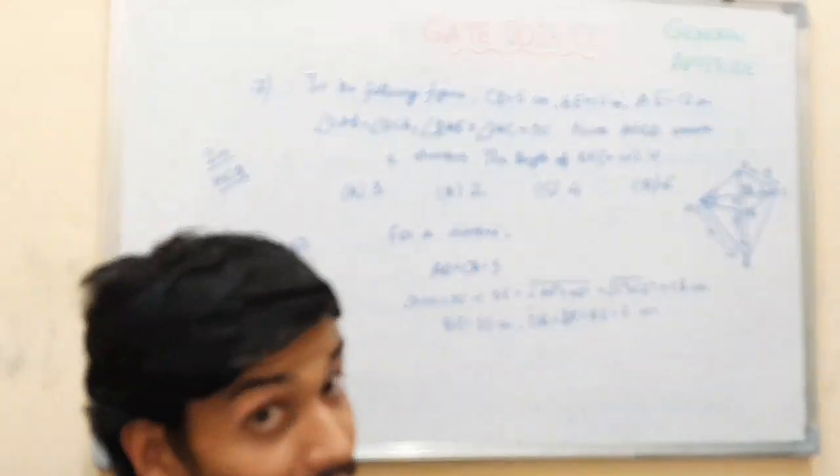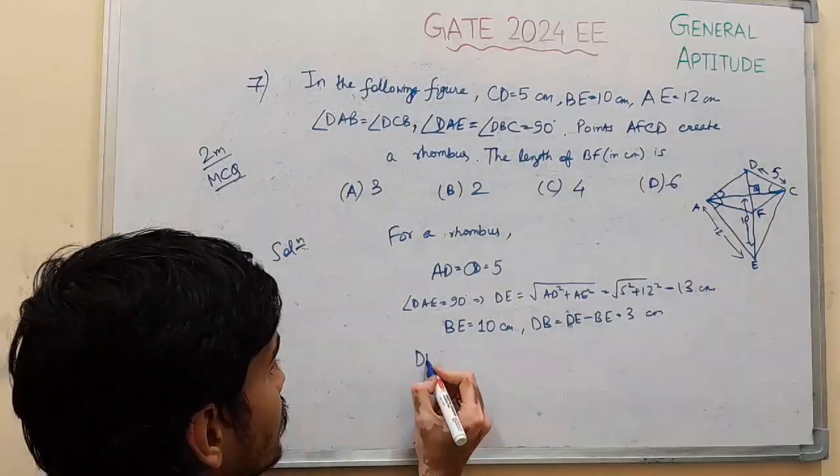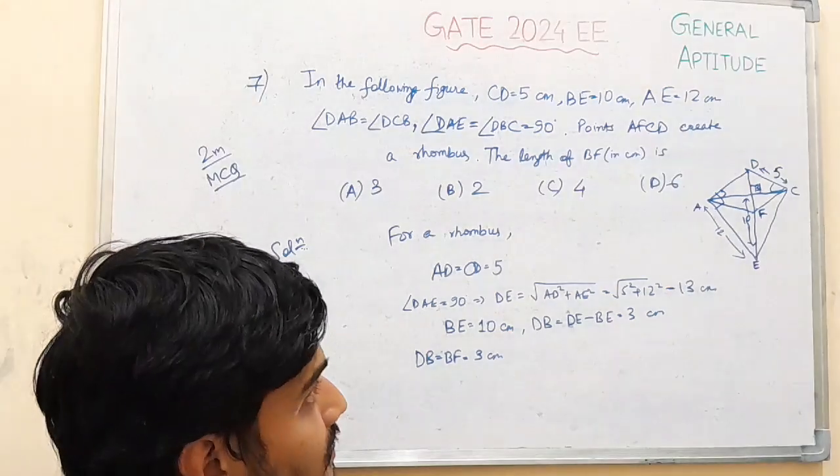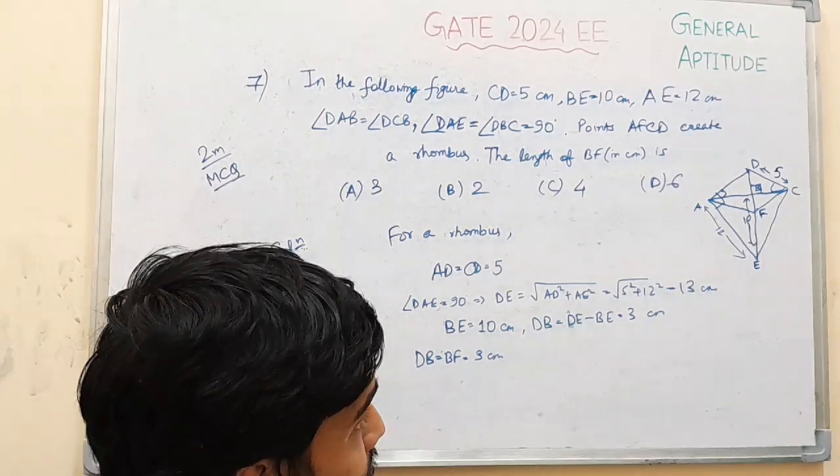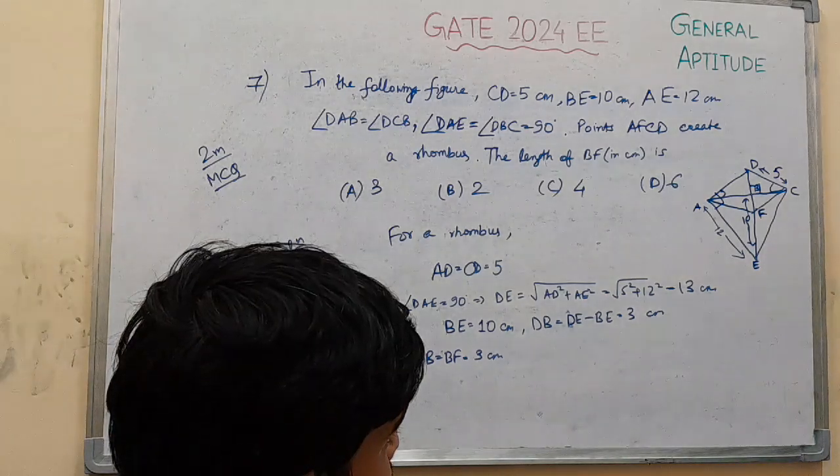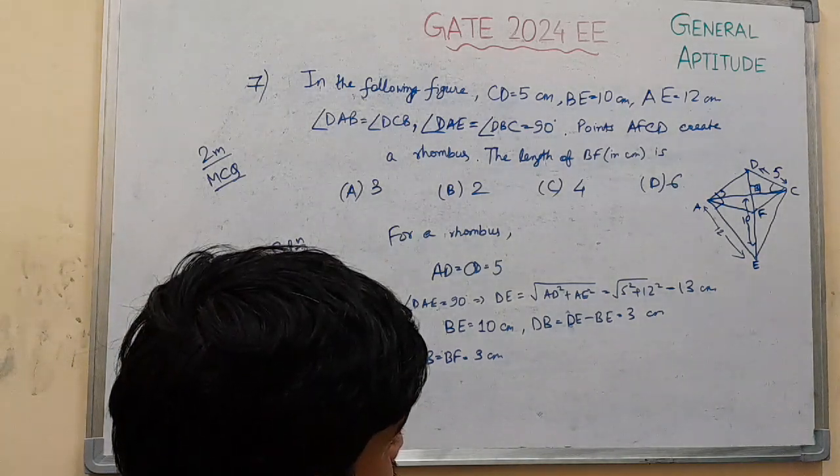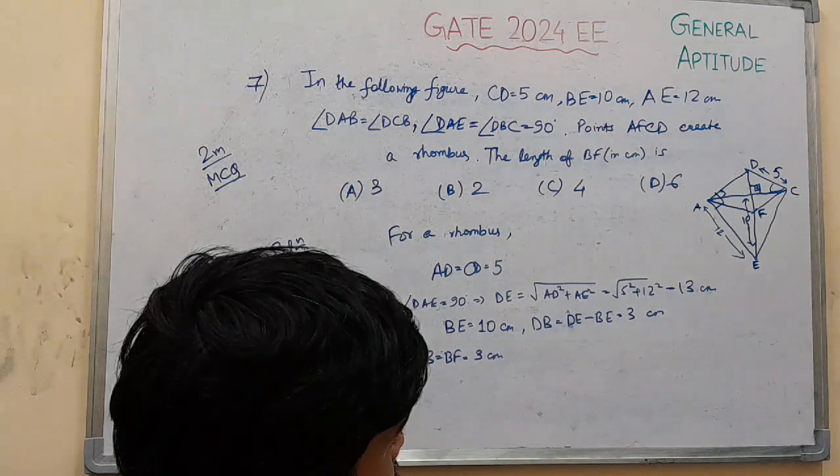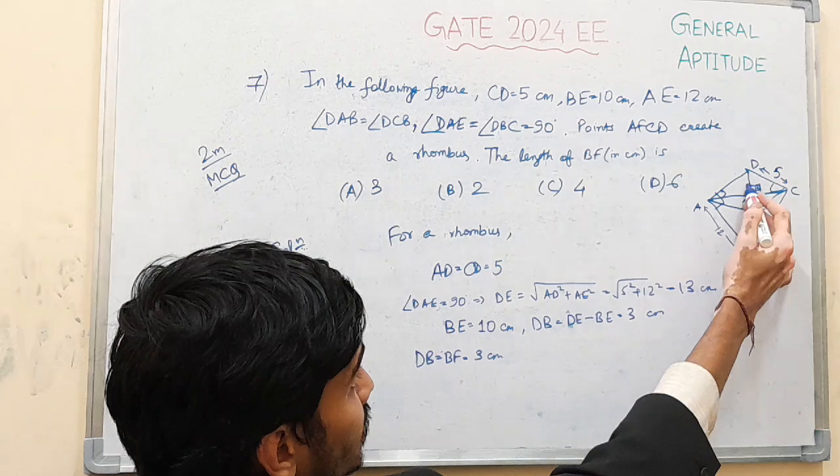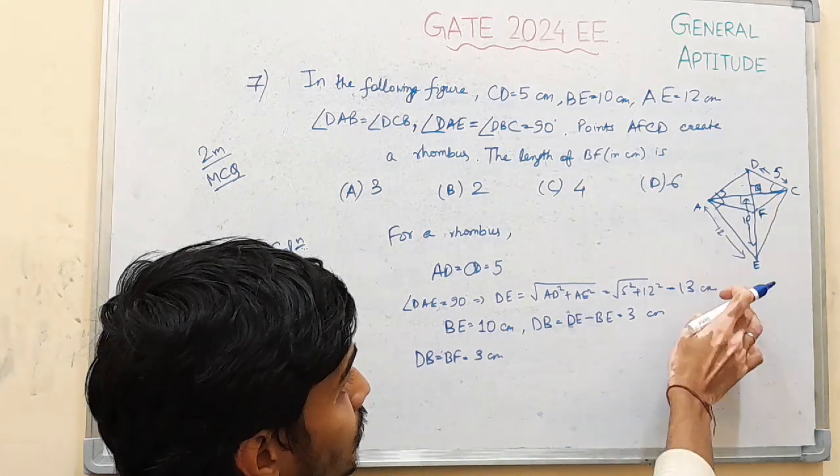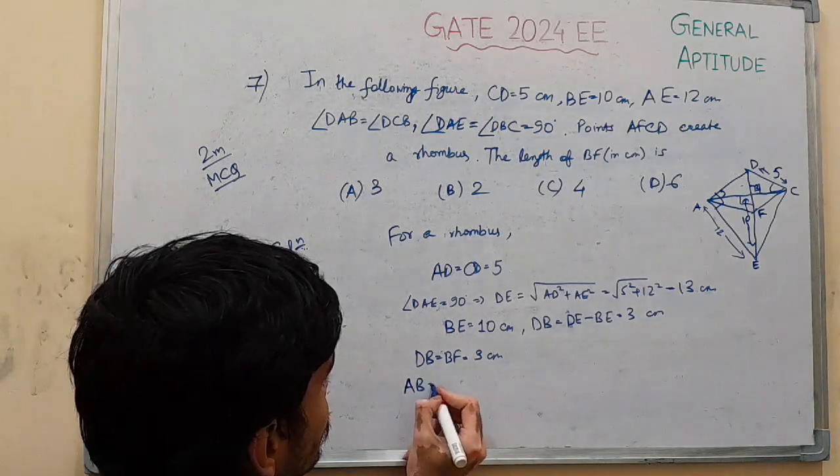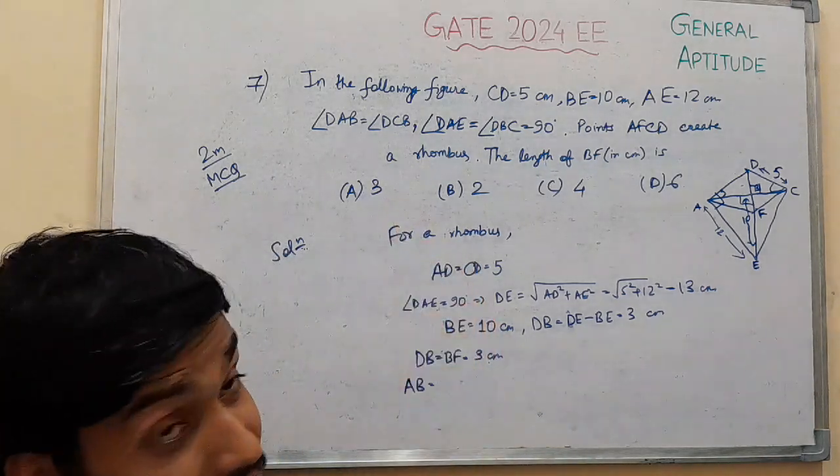As in the rhombus the diagonals bisect each other, DB equal to 3 by 2. But here comes the wrong part. If this is a right angle, this is also a right angle. From here we get something, but what is wrong?